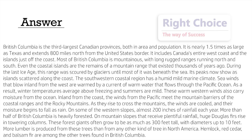During the last ice age, this range was scoured by glaciers until most of it was beneath the sea. Its peaks now show as islands scattered along the coast. The southwestern coastal region has a humid, mild marine climate. Sea winds that blow inland from the west are warmed by a current of warm water flowing through the Pacific Ocean. As a result, winter temperatures average above freezing and summers are mild. These warm western winds also carry moisture from the ocean. Inland from the coast, the winds from the Pacific meet the mountain barriers of the coastal ranges and the Rocky Mountains. As they rise to cross the mountains, the winds are cooled, and their moisture begins to fall as rain — on some western slopes, almost 200 inches of rainfall each year.